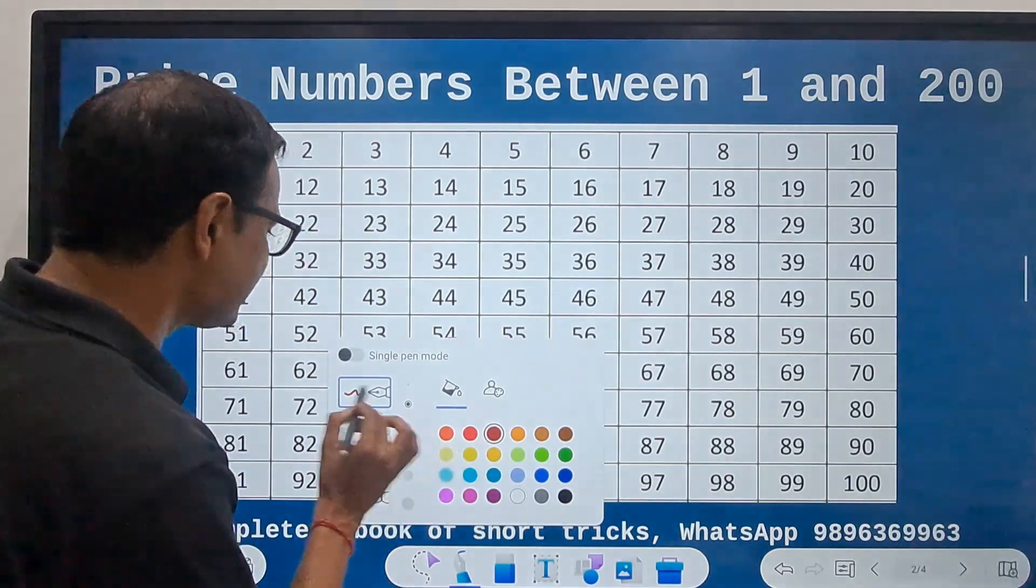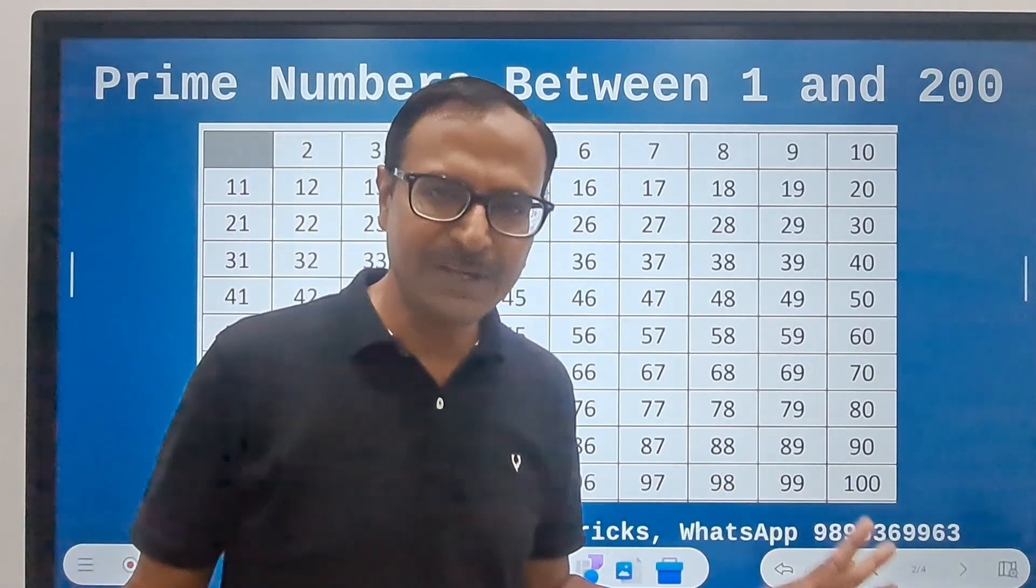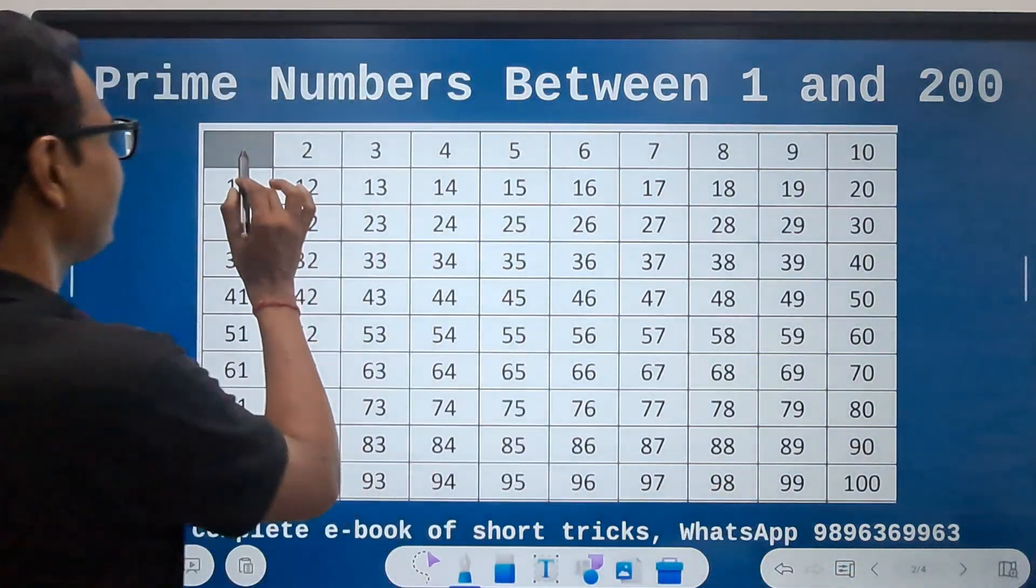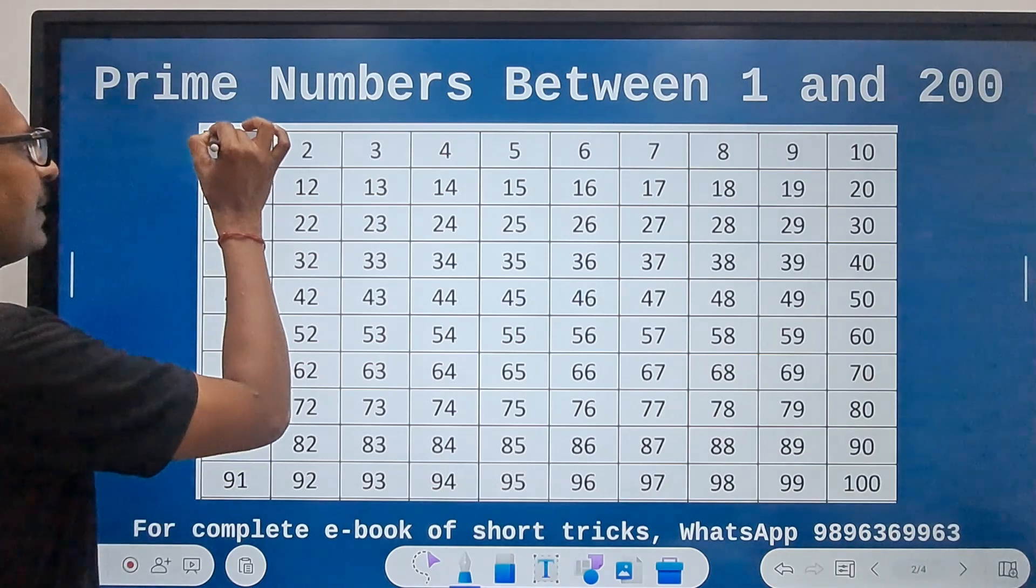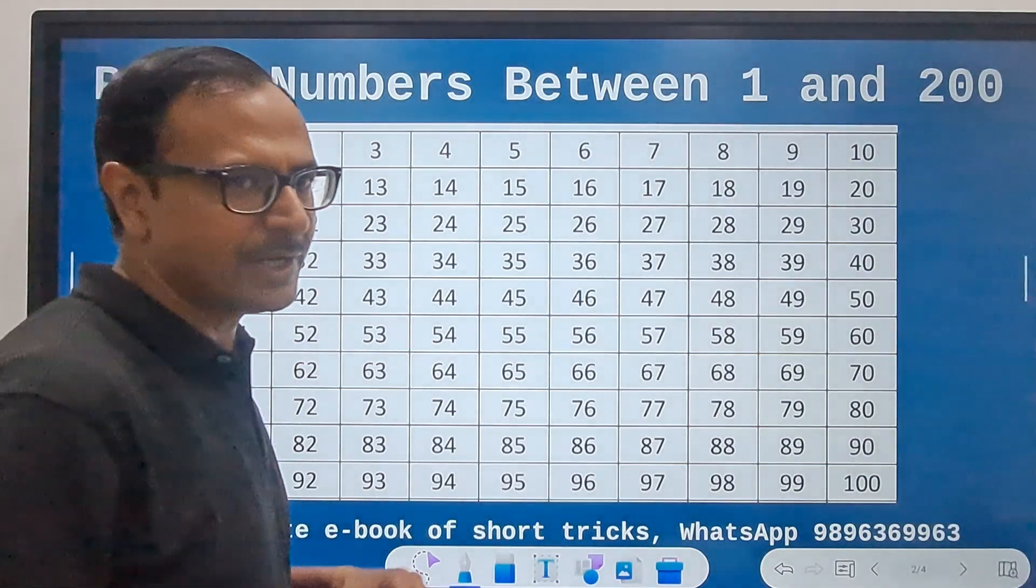Now the first thing I am going to do is to eliminate all the even numbers. 1 is neither prime nor composite, so it is out of question.